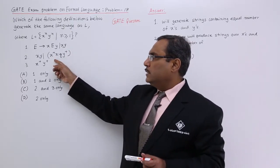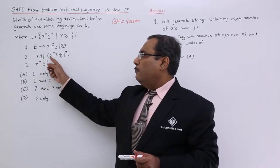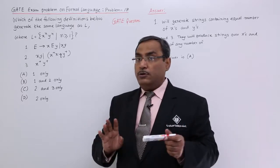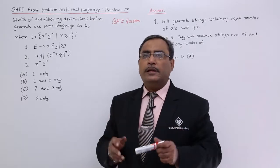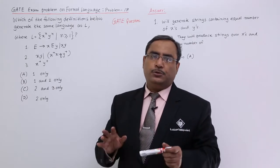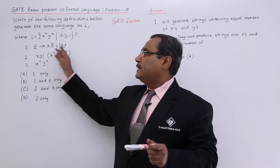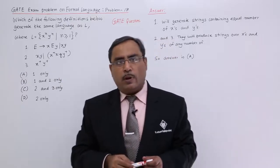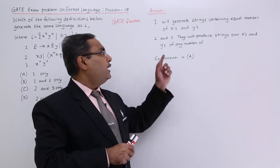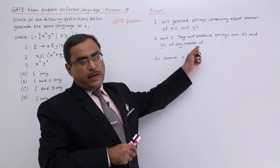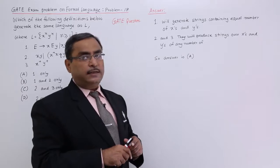But if you consider regular expressions number 2 and 3, it is true that we are having combinations of x and y, but you cannot ensure that equal number of x and equal number of y will be coming in the terminating string. That is not assured. Here we will be having combination of x and y's, but equal number of x and equal number of y is not ensured. That is why in 2 and 3, they will produce strings over x and y's for any number, possibly unequal numbers.